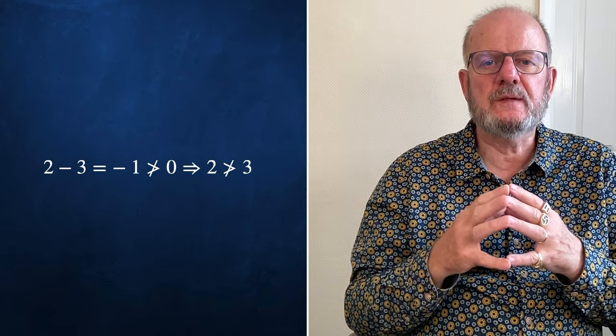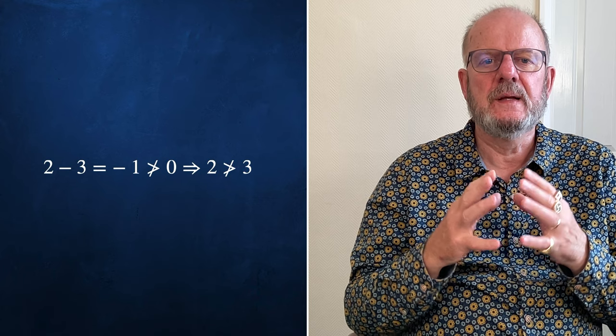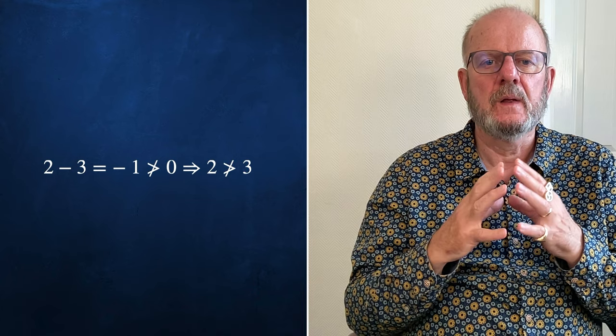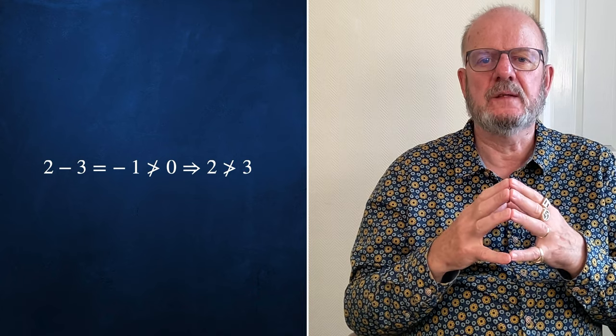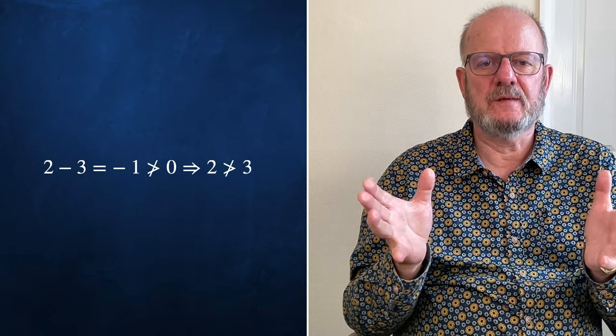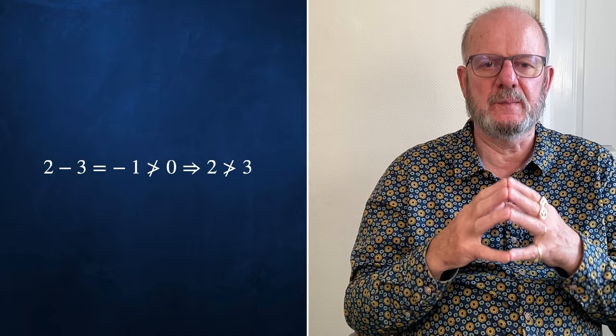But trichotomy does not apply to all numbers. It does not apply to the number 0 over 0, which I named Nullity. Worse than that, if we add Nullity to any of the existing three categories, negative, 0 or positive, we get a contradiction. And contradictions aren't usually allowed in mathematics. So what are we to do?